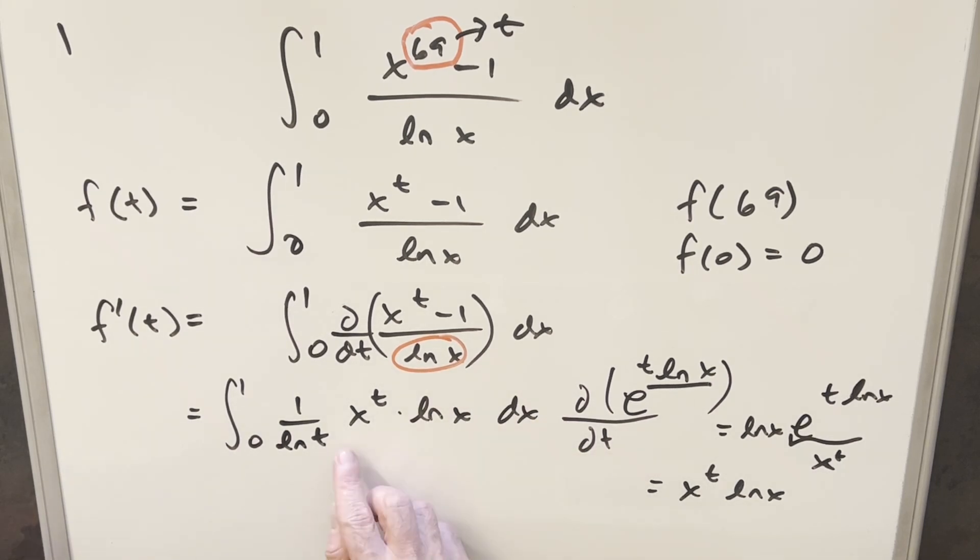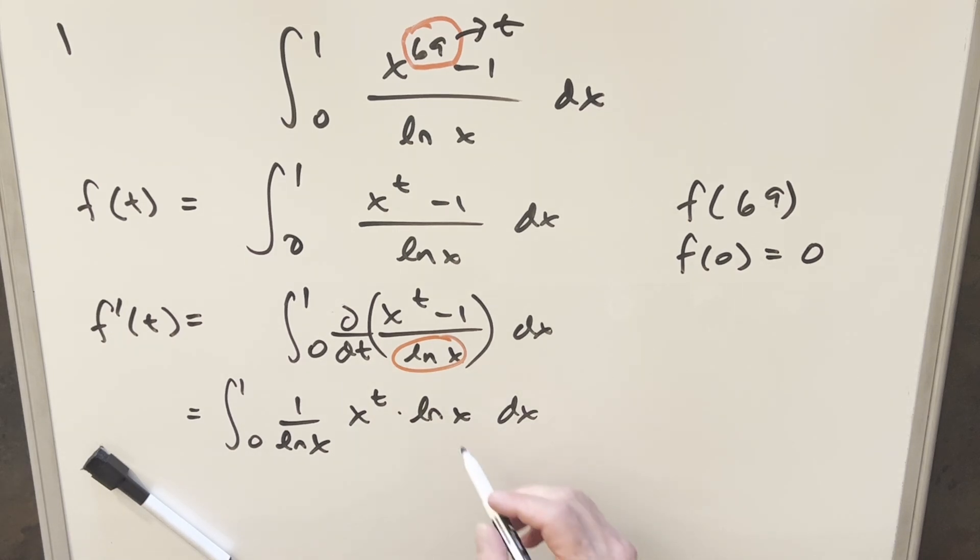And one thing I noticed, I think I messed up the variable over here. This, of course, is ln x, not ln x. So it gets confusing when you have two variables sometimes. So this is ln x. But now what we can do is we can just cancel these ln x's off.